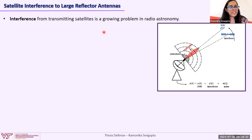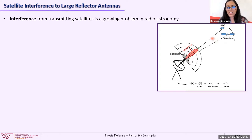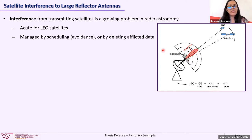Starting with the first question, I'll briefly introduce the satellite interference problem. Interference from transmitting satellites is a growing problem in radio astronomy. A satellite traverses the antenna pattern and interferes with the signal of interest, such that the output of the ground antenna has the signal of interest S, the noise N, along with an unwanted signal from the interferer Z. This problem is particularly acute for LEO satellites due to their large number in orbit. Currently, it is managed by scheduling, avoidance, or by deleting the afflicted data.